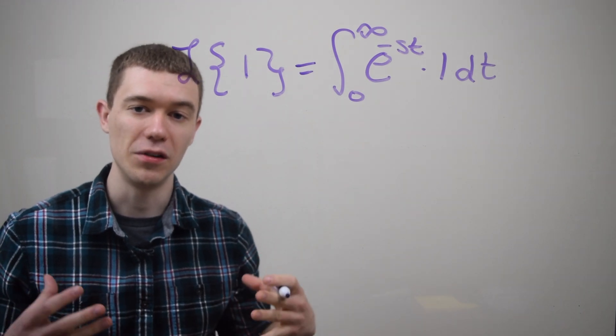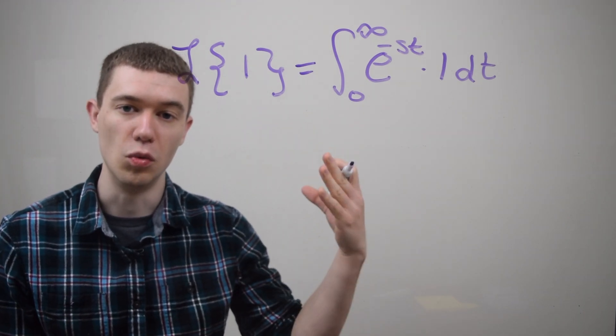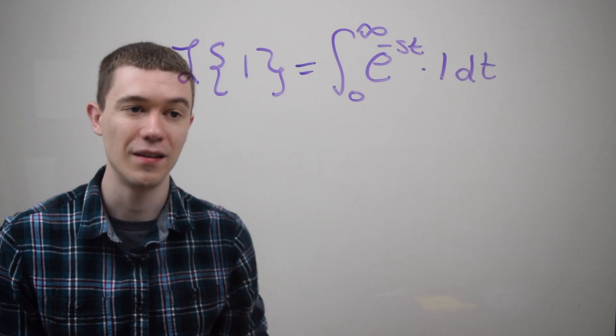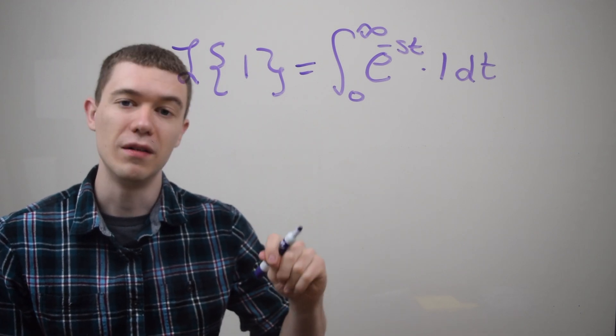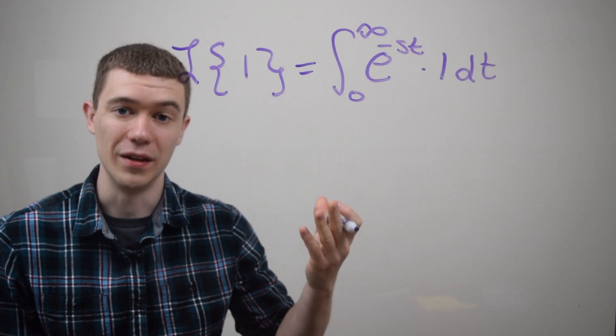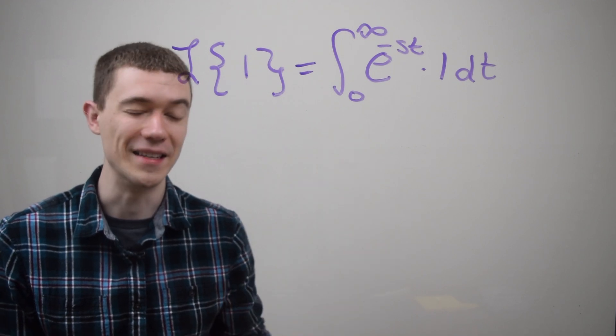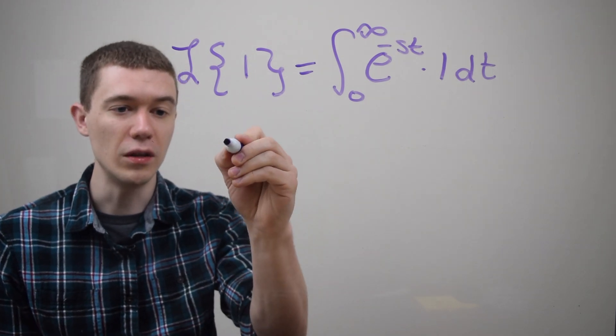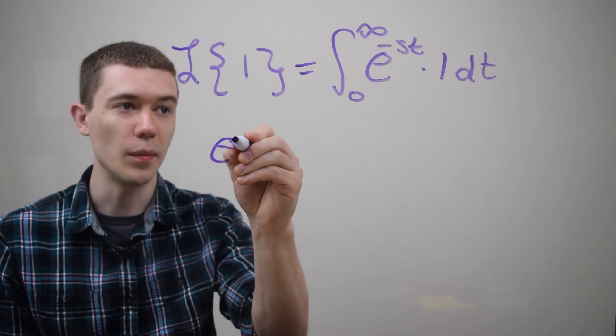Well any time that I want to integrate e to a constant times t, remember the derivative of e to the x is e to the x, or in this case the integral of e to the x is e to the x, and you can do a u substitution to get what I'm about to get.